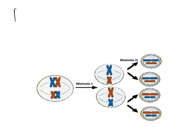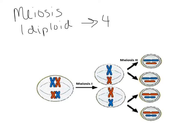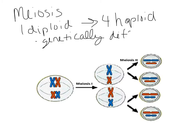Let's do a quick meiosis intro — how we're going to actually form these gametes for sexual reproduction. Meiosis goes from one diploid cell to four haploid cells. That's already a big difference from mitosis, which went from one diploid cell to two diploid cells. Now we're going to four cells, and these cells are haploid and genetically different from both the parent as well as their sister cells.